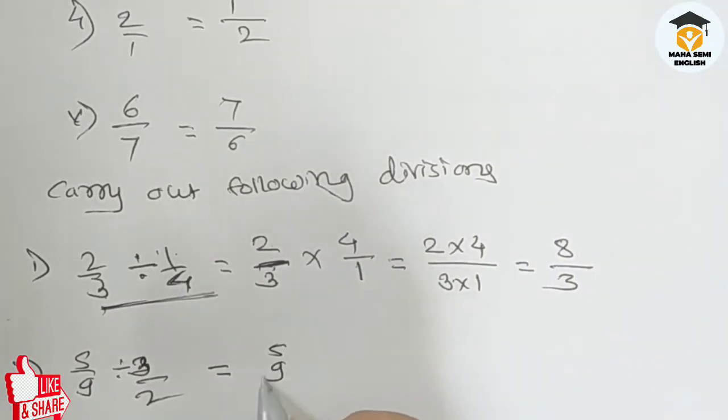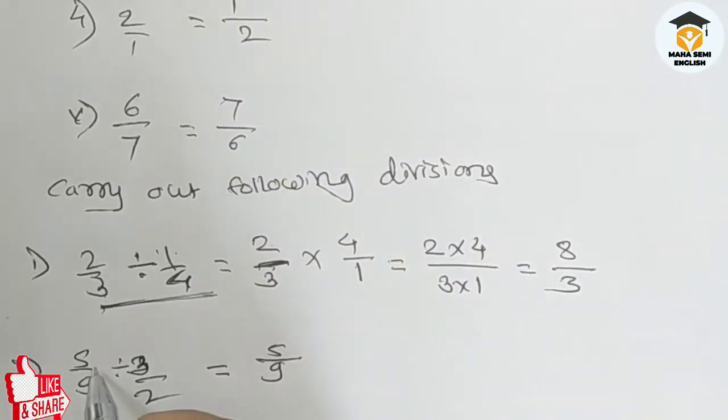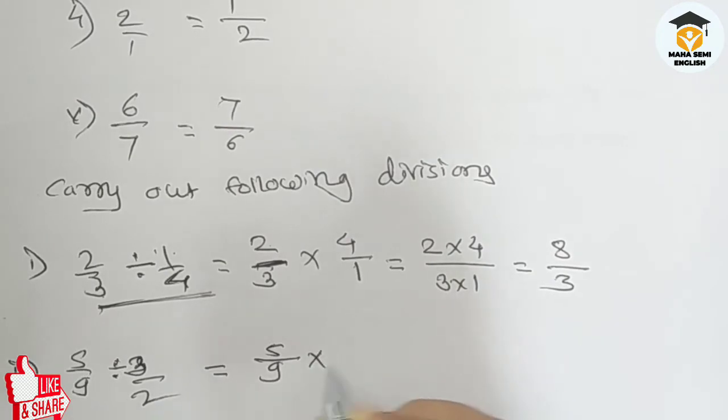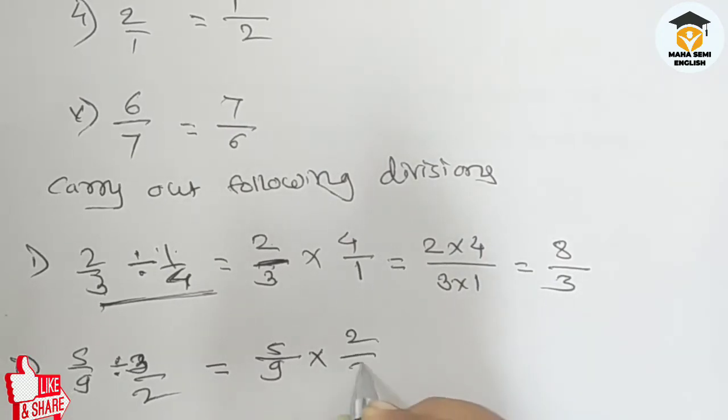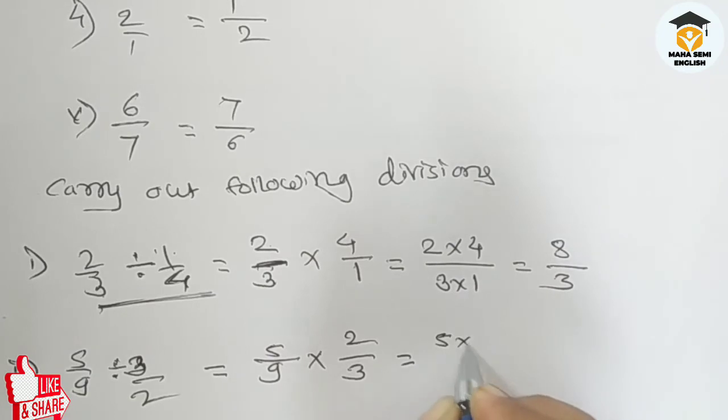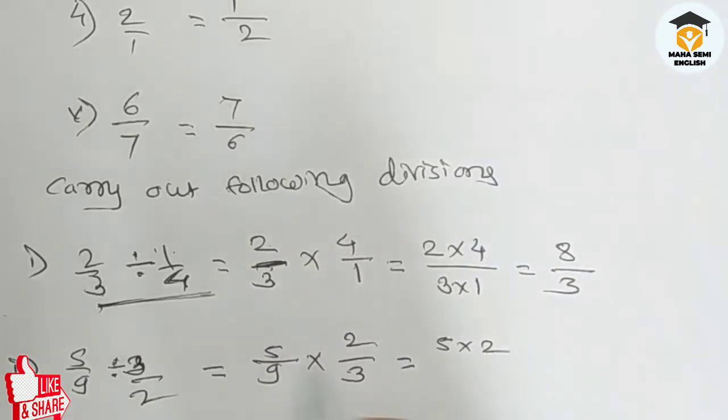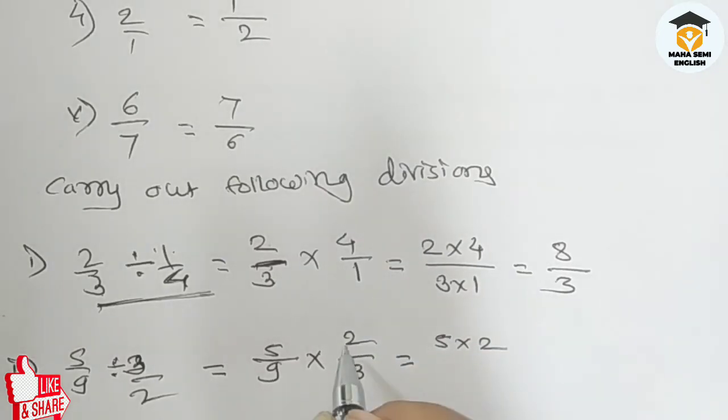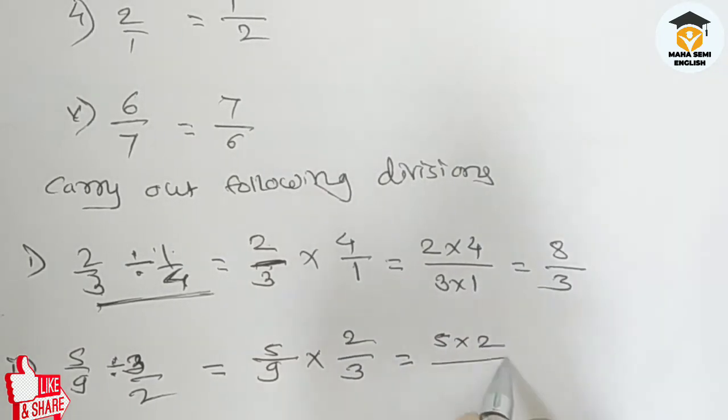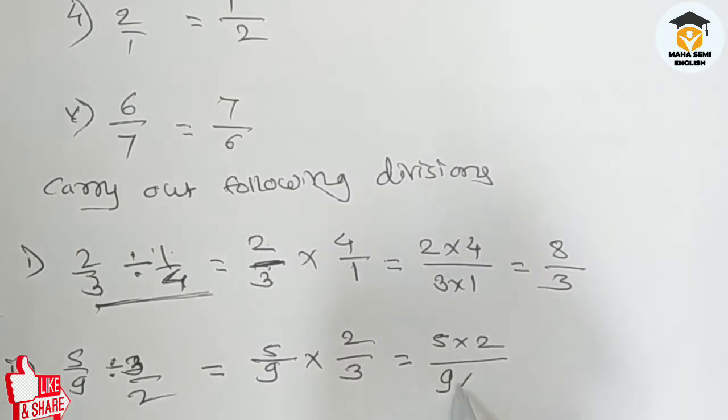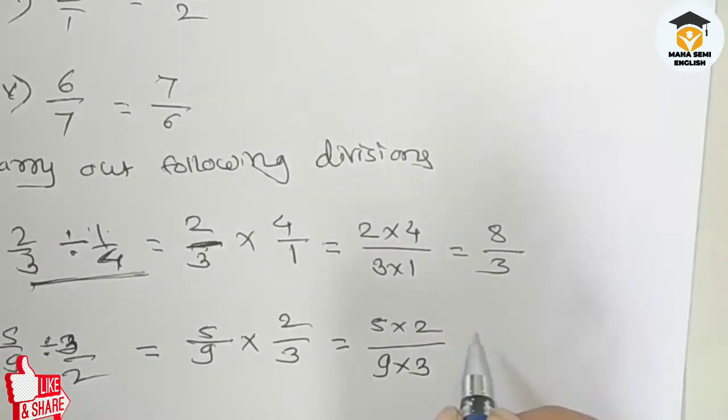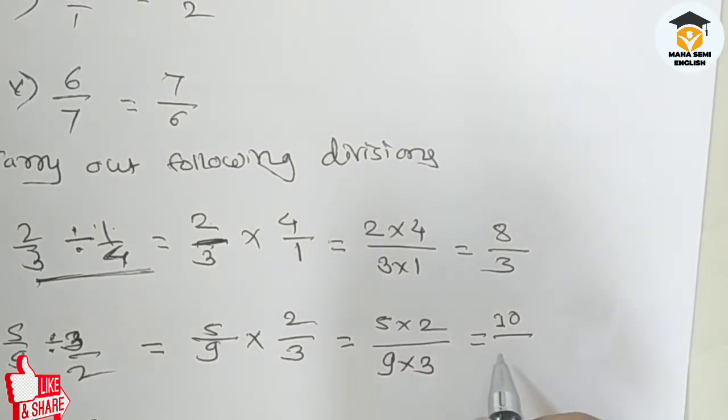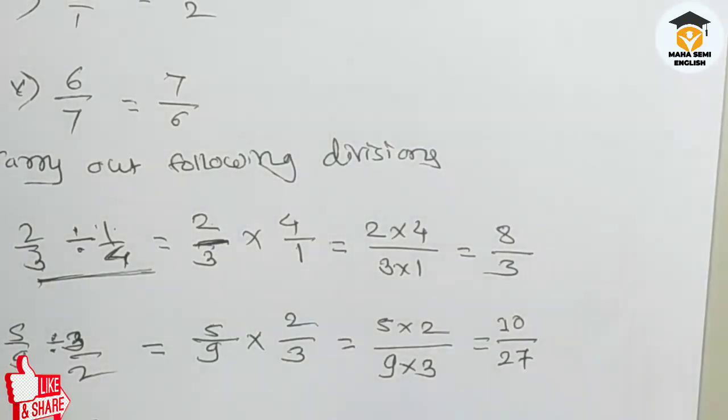Next is 5 upon 9 divided by 3 upon 2. So 5 upon 9 into 2 upon 3 equals 5 into 2. This is the reciprocal of 3 upon 2, which is 2 upon 3. So 5 into 2 divided by 9 into 3. Five into two is 10, nine into three is 27.